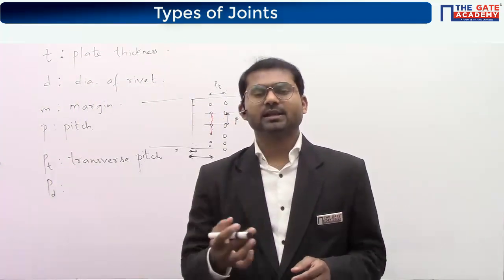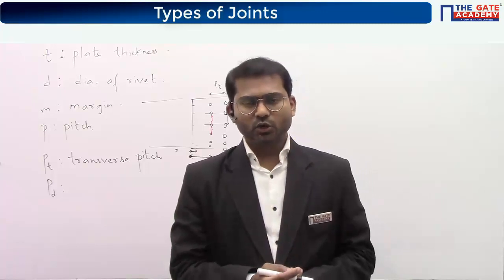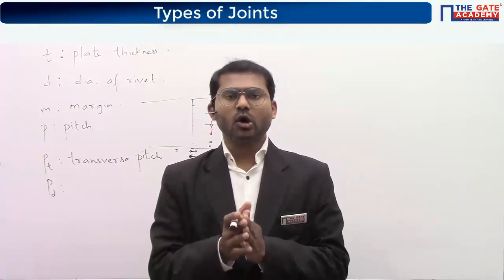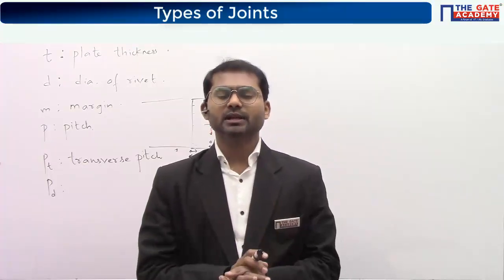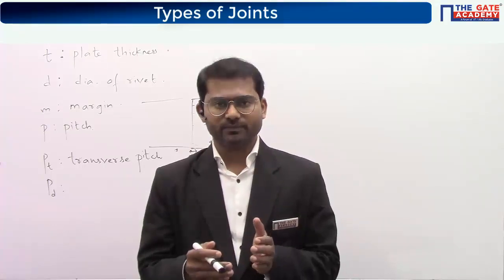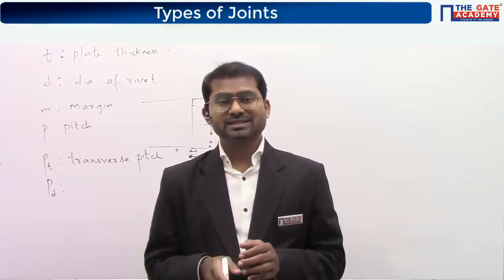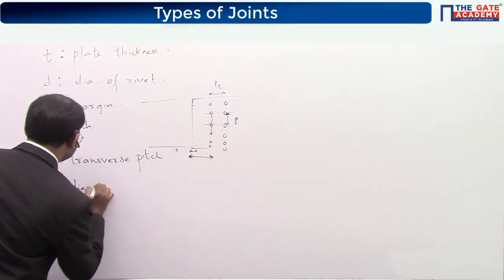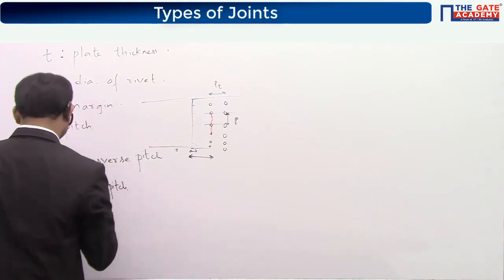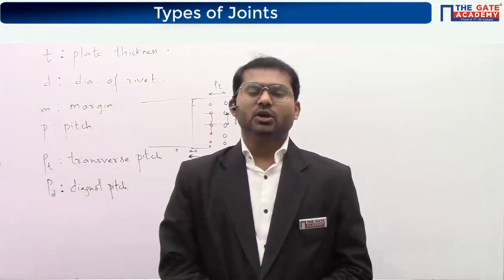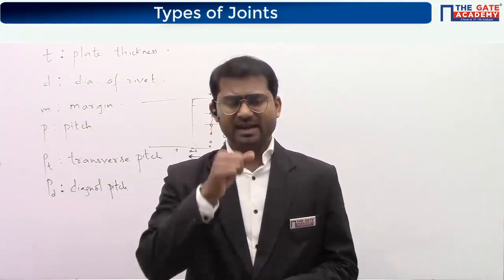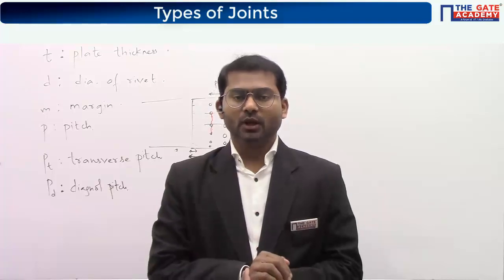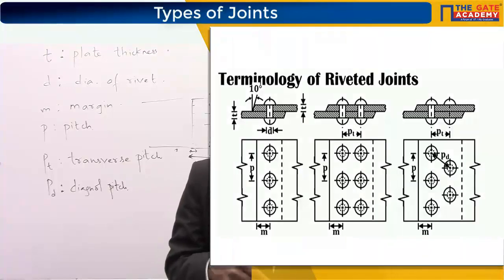In the third diagram there is another extra term, P-suffix-D. When arranging rivets in a zigzag fashion — which we call zigzag riveting, as opposed to chain riveting in the second diagram — there should be an optimum distance in the diagonal direction as well. This is denoted by Pd and called diagonal pitch.